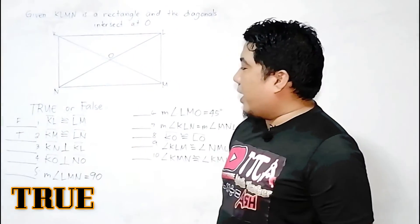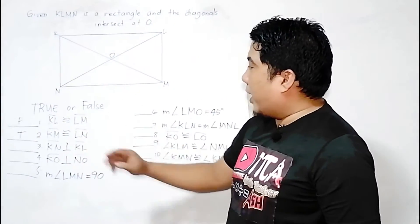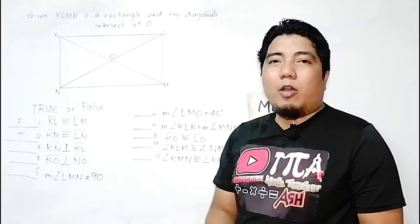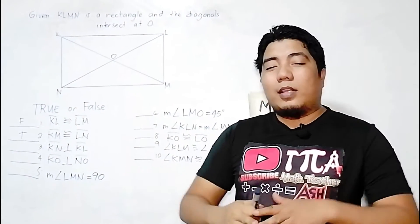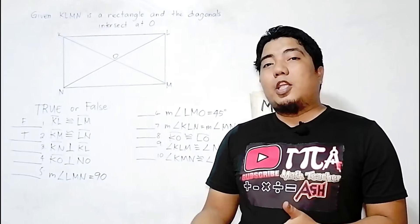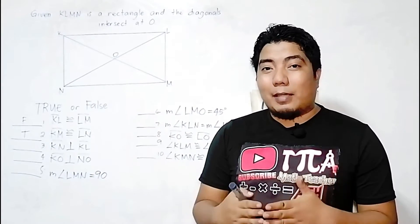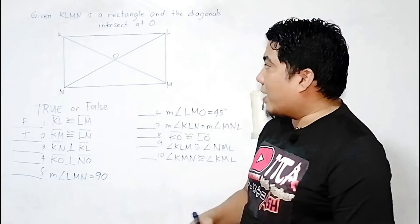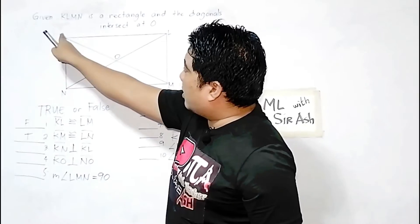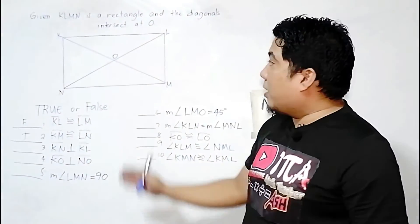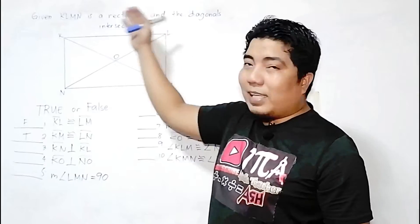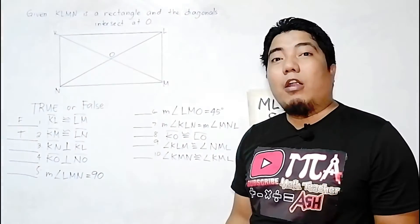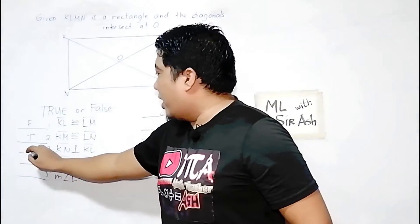Statement 3: Line segment KN is perpendicular to KL. Perpendicular means that when two lines or line segments intersect, they form a 90-degree angle. Since all angles in a rectangle are 90 degrees, KN and KL are indeed perpendicular to each other. Therefore, this statement is true.